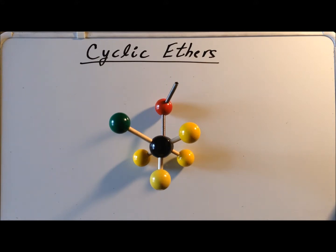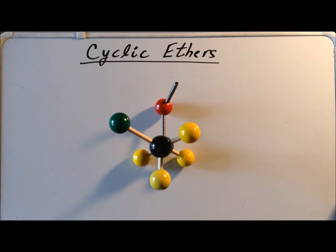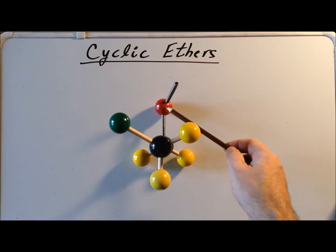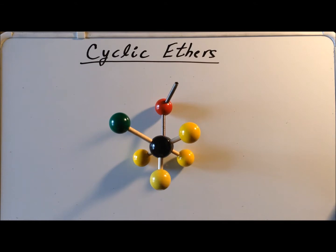Here our reactant molecule is arranged in the style of a Newman projection, and we notice that the chloride and the alkoxide oxygen are in a gauche conformation and that the nucleophile is not in the correct position for a backside attack. Therefore, in this particular conformation, the intramolecular SN2 Williamson synthesis is simply not possible.